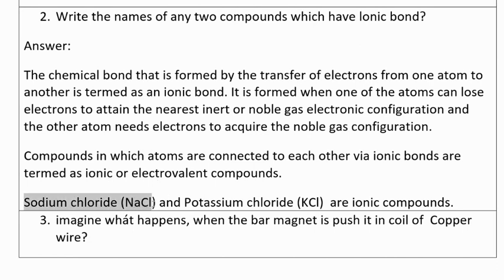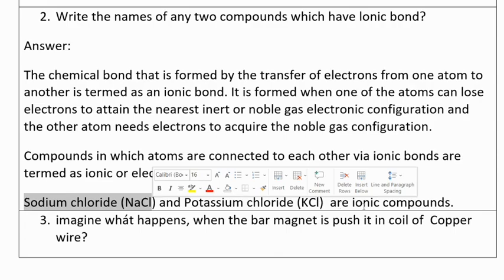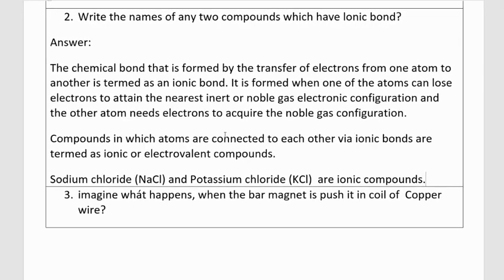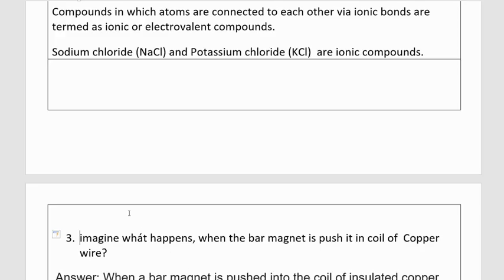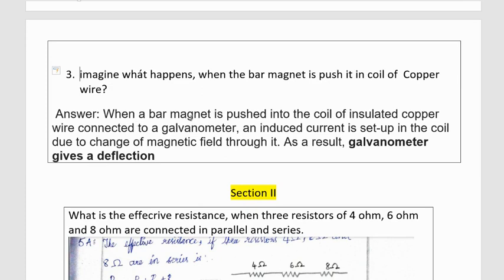Sodium chloride NaCl and potassium chloride KCl are ionic compounds. Third question: imagine what happens when the bar magnet is pushed into coil of a copper wire. When a bar magnet is pushed into the coil of an insulated copper wire connected to a galvanometer, an induced current is set up in the coil due to the change of magnetic field through it. As a result, galvanometer gives a deflection.